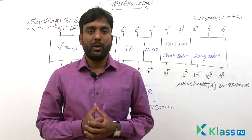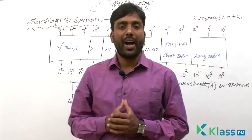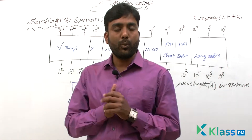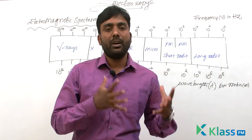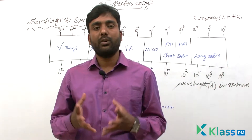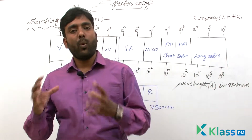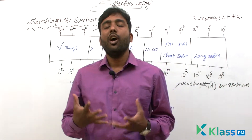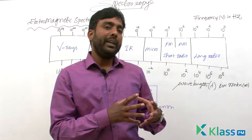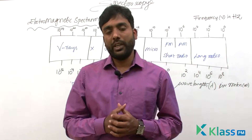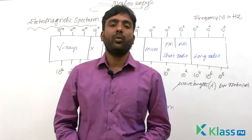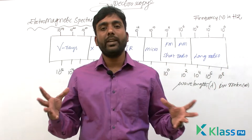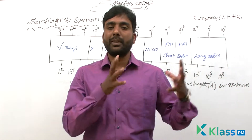Hello students, welcome to class PM. In today's class we are going to learn about electromagnetic spectrum. We are discussing about spectroscopy. In the previous classes we learned about the significance of spectroscopy, what electromagnetic spectrum is, its characteristics, and the parameters that describe electromagnetic radiation. Now in today's class we are going to learn what is electromagnetic spectrum and what are the different types of electromagnetic radiations present in it.